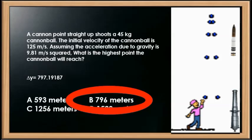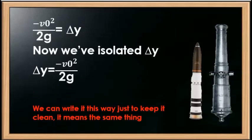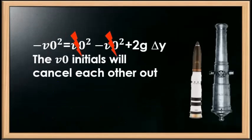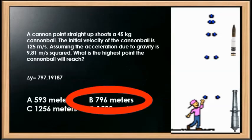You don't necessarily have to memorize all three formulas. What you need to know to work this question is what we transform delta Y into: delta Y equals the initial velocity squared over 2 times gravity. That's the key formula to remember for projectile motion problems when you're asked how high a projectile will go. I walked through the full derivation so you understand how we arrived at that formula.